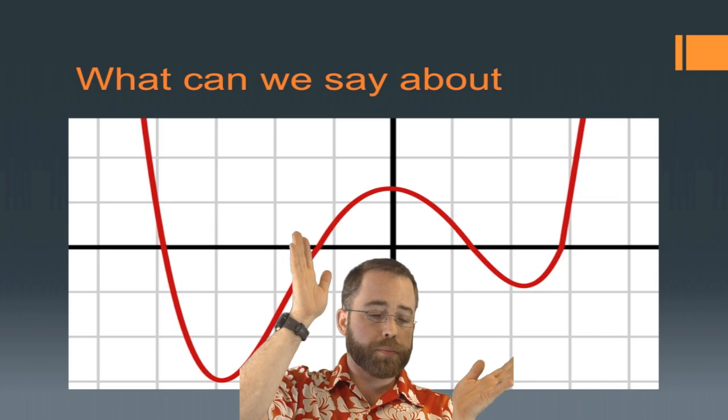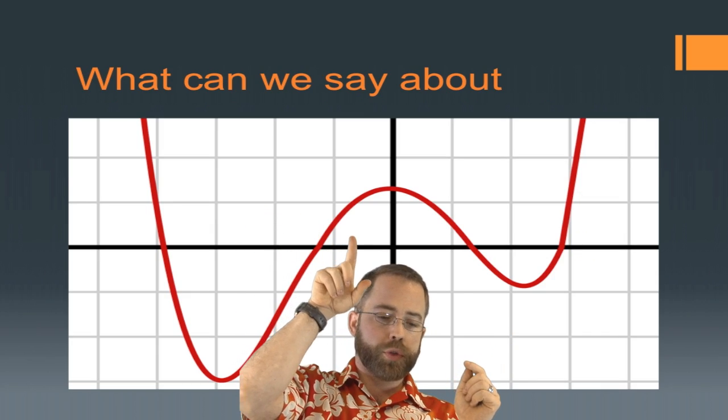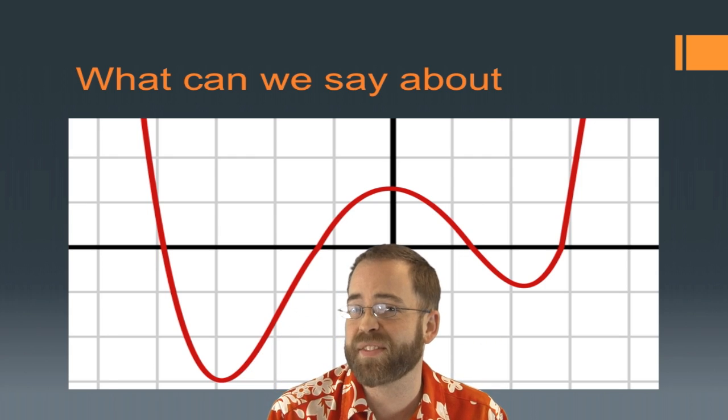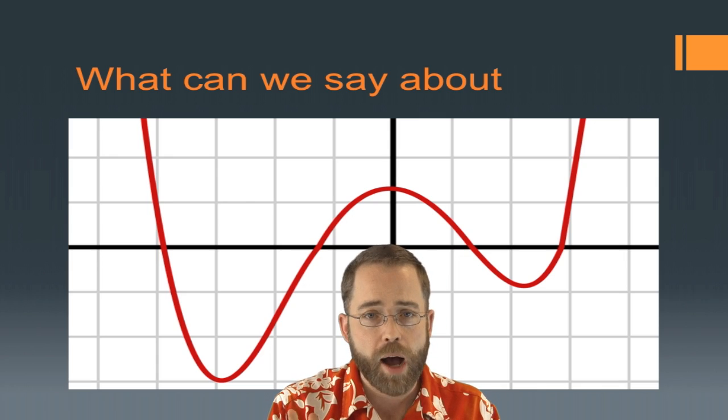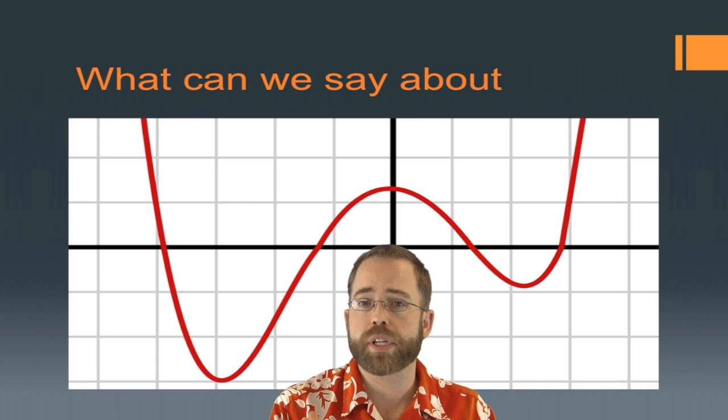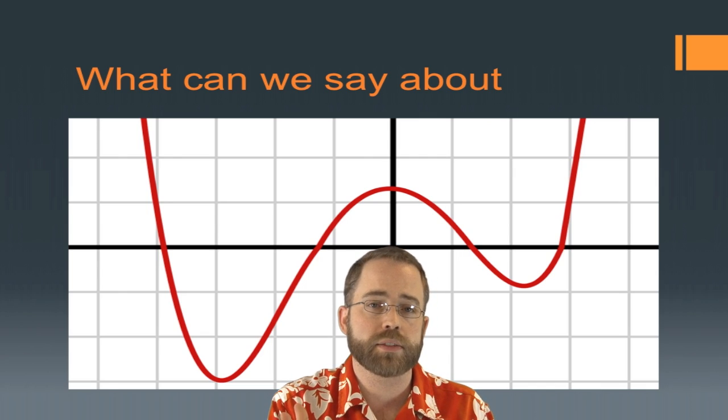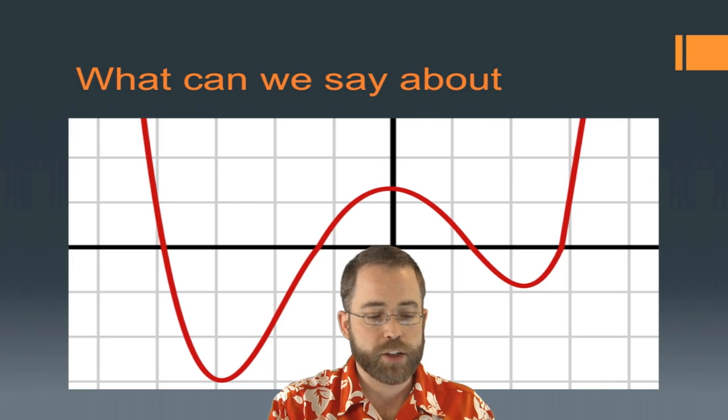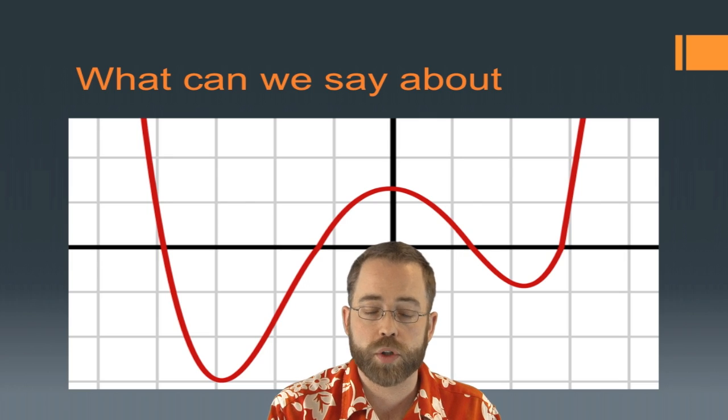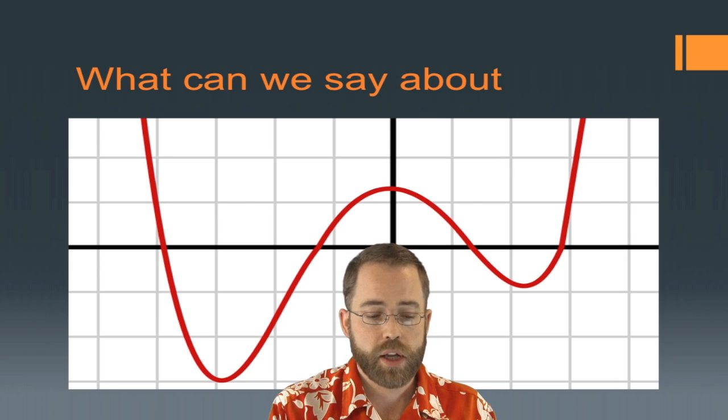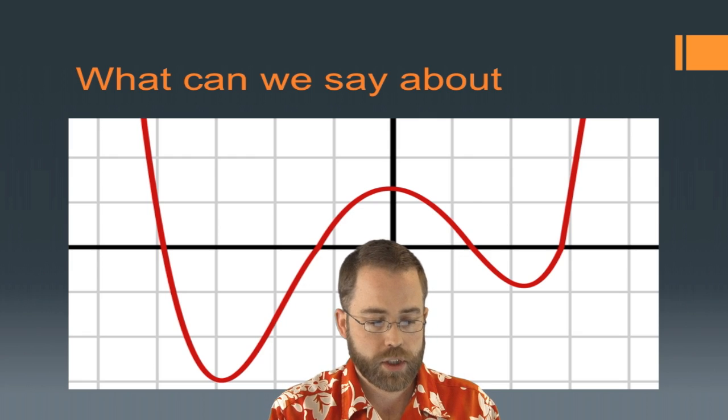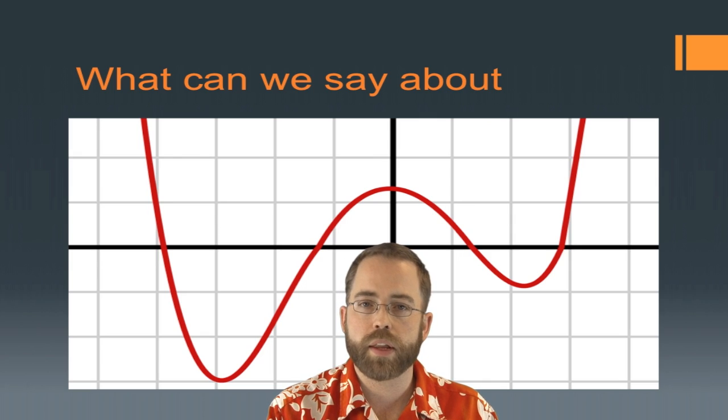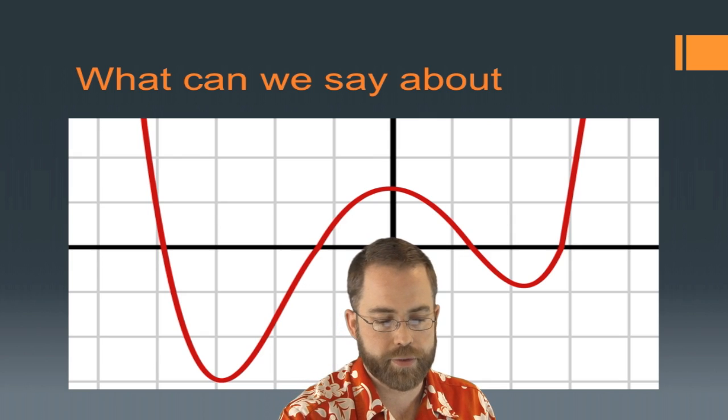All right, looking at this graph here, count the branches with me, we've got one, two, three, four, it's going up at both ends, which looks like an even degree possibility. So this is probably a fourth degree polynomial. We've got four branches, it's going up at both ends, it's probably x to the fourth with a positive number in front of it. It crosses the x-axis four times, so it's going to have four real zeros. It's got a positive y-intercept. There's a lot of things that we can tell about this equation without even having the equation in front of us. We can tell a lot of things from the graph.